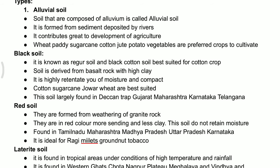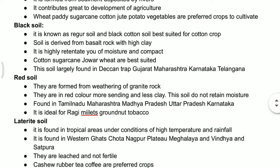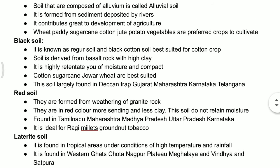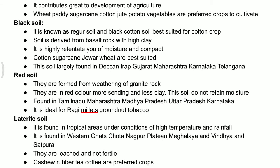One more soil is black soil. Black soil has alternative names — it is also called regur soil as well as black cotton soil. A commonly asked question is: why is black soil called black cotton soil? Black cotton soil is named so because black soil is very best suited for the cultivation of cotton.